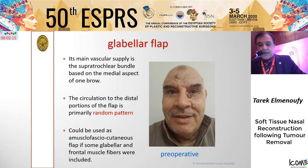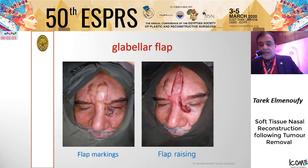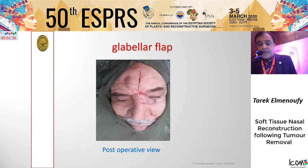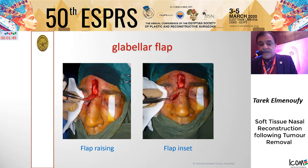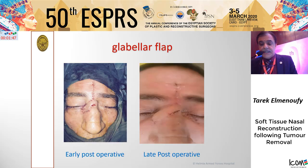The glabellar flap is another subtype of the forehead flap, with its main vascular supply from the supratrochlear bundle based on the medial aspect of the eyebrow. In the first case, we excised the tumor with safety margin, leaving a defect, and used the glabellar flap to cover it with direct closure of the primary site — with good late post-operative results. Another example shows excision of the tumor with safety margin, elevation and inset of the glabellar flap, and the late post-operative review with good accepted results and direct closure of the defect.